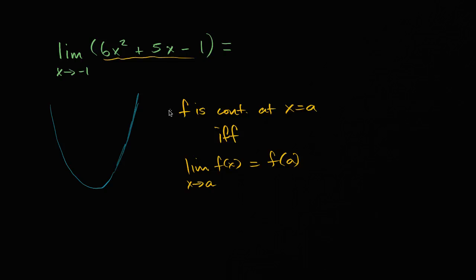And so we know that this expression could define a continuous function, so that means that the limit as x approaches a for this expression is just the same thing as evaluating this expression at a. And in this case our a is negative one. So all I have to do is evaluate this at negative one.